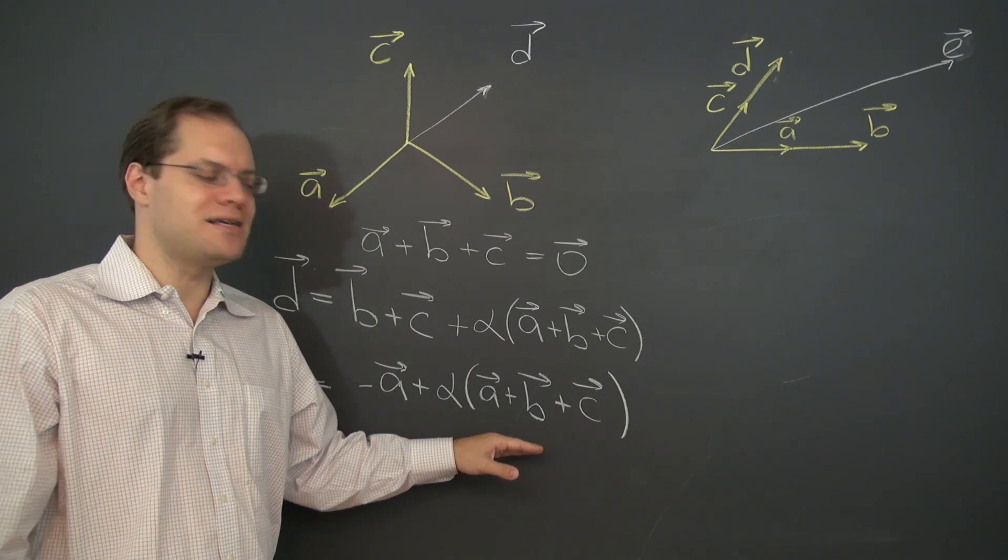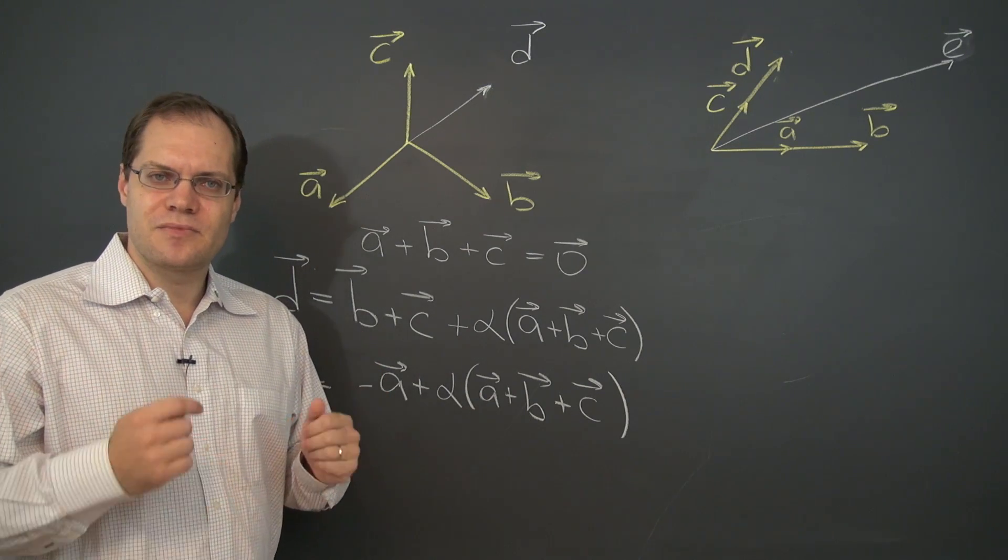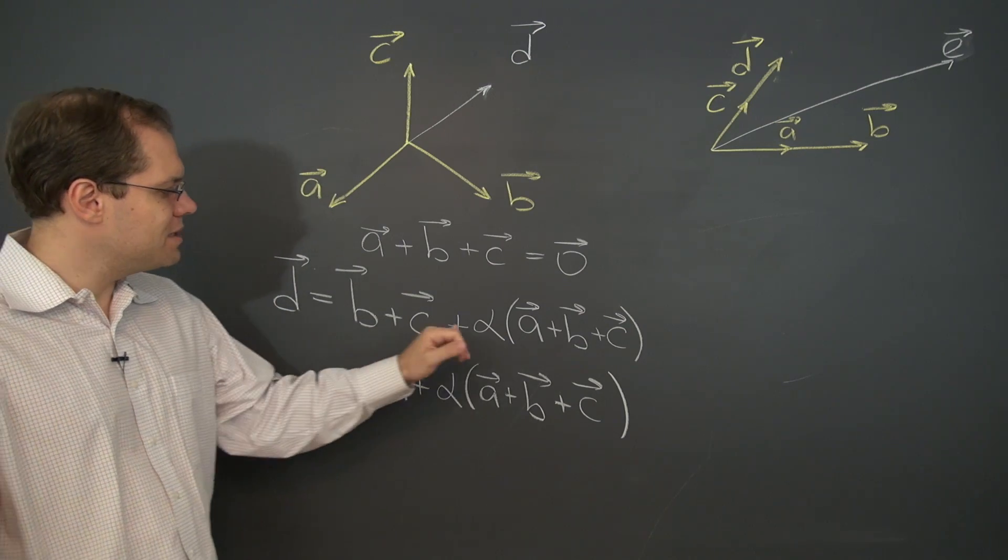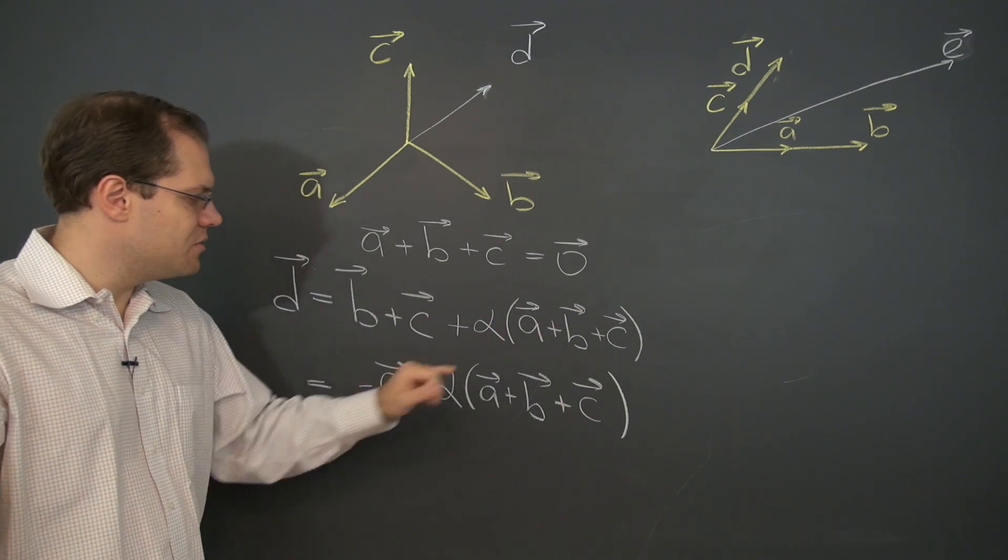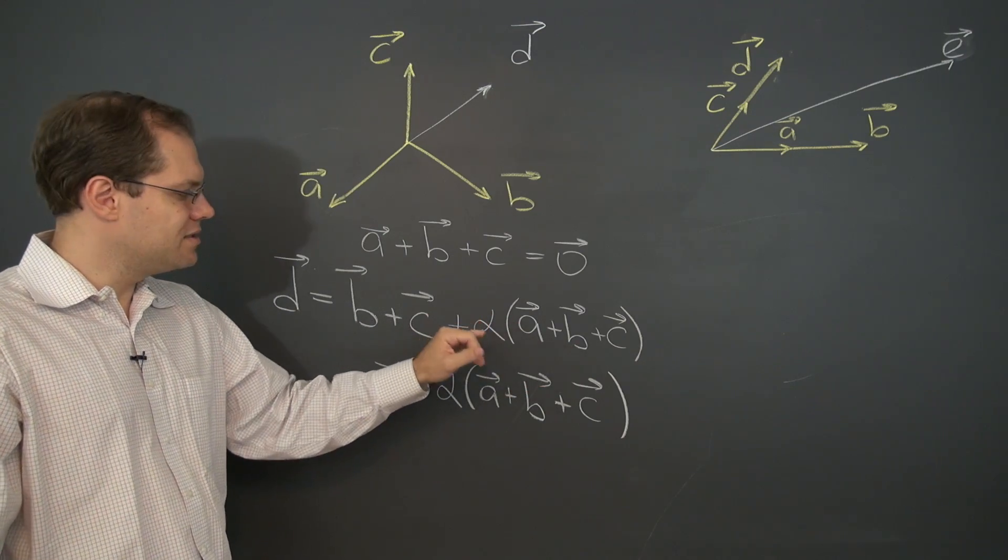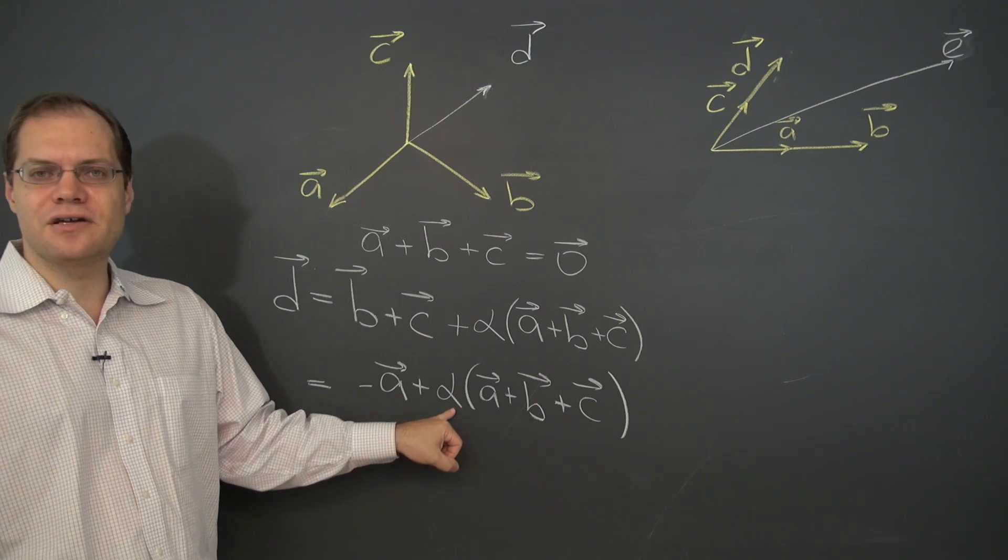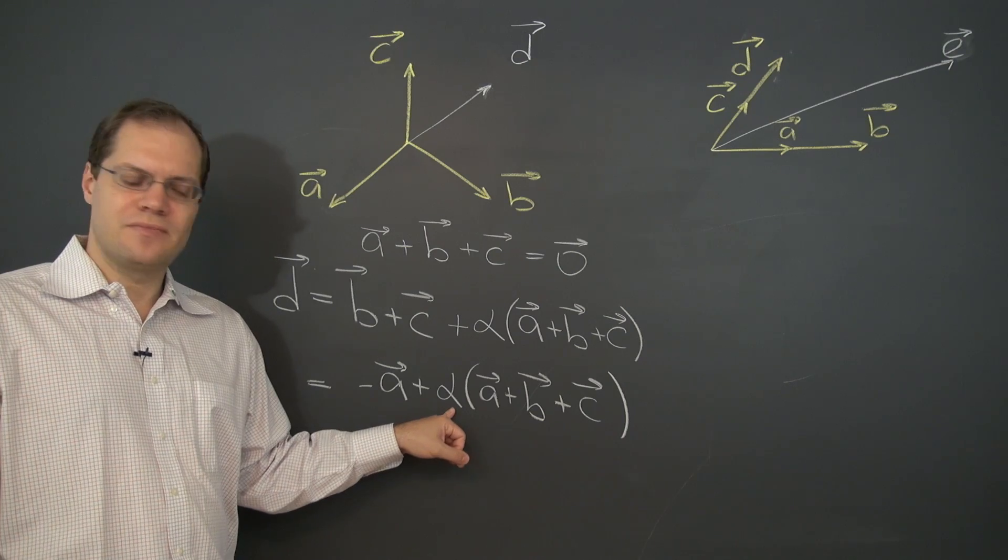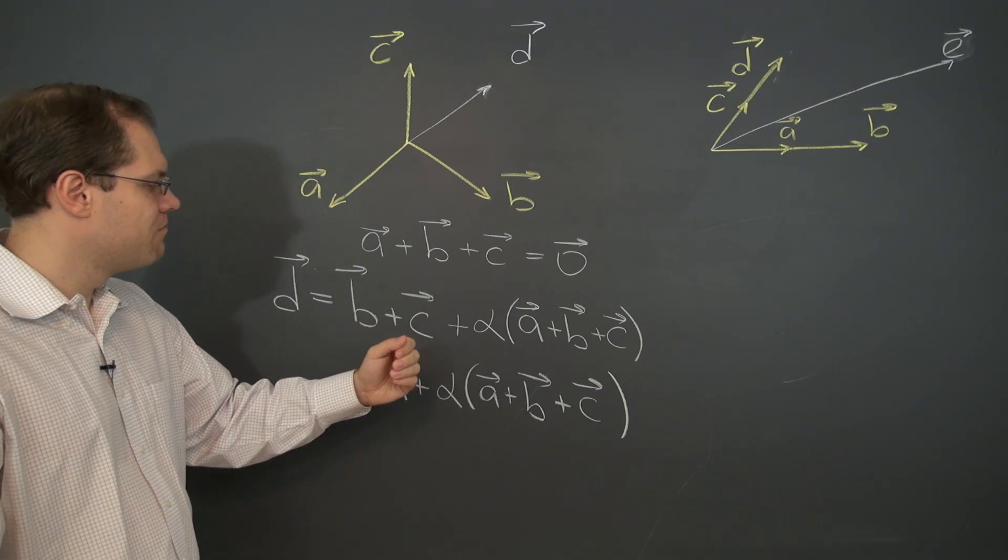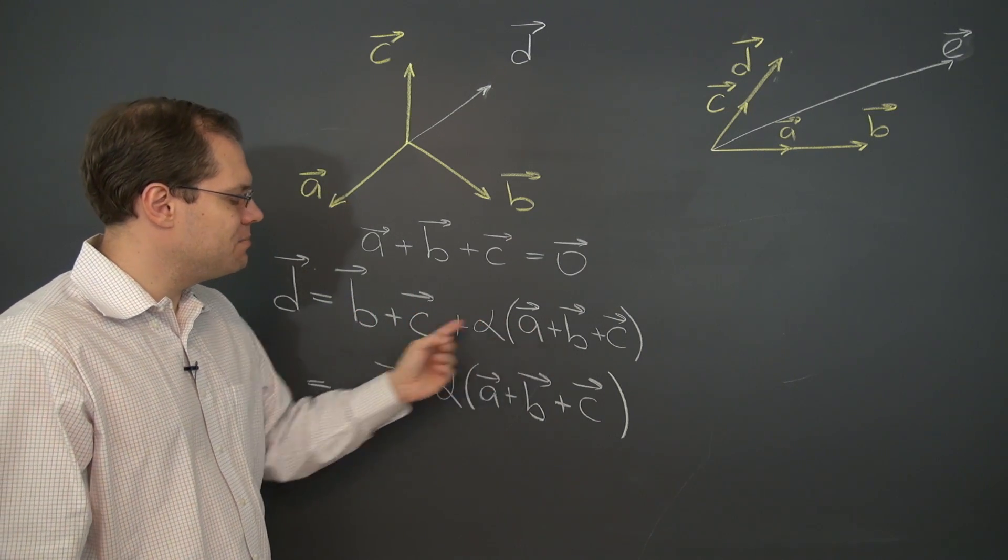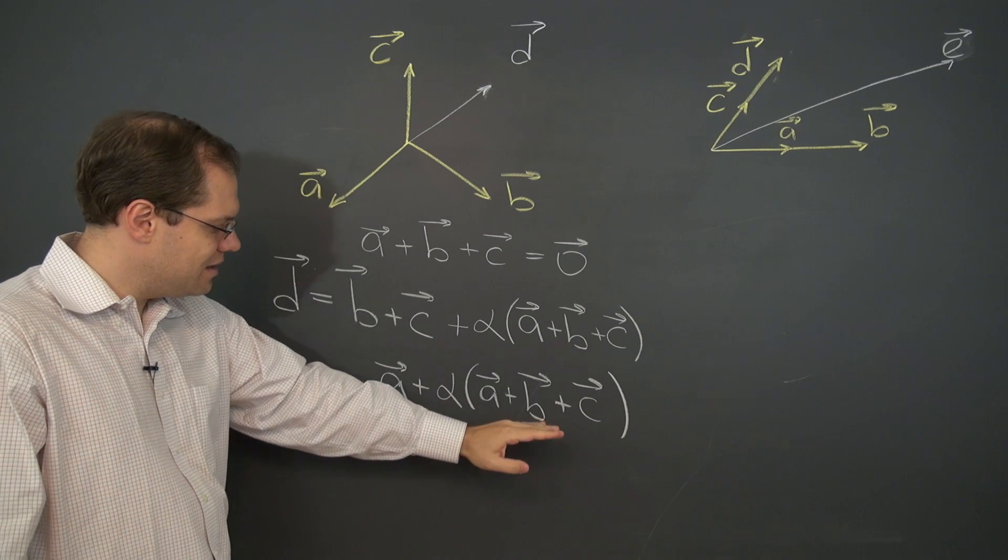But it's important to realize that these two expressions represent the same set of linear combinations. For example by taking alpha equals let's say 1 we would get a plus 2b plus 2c. When alpha equals 1 this expression delivers a plus 2b plus 2c. And you will notice that if we take alpha equals 2 here, then we would also get a plus 2b plus 2c. Let me take alpha equals 10. We would get 10a plus 11b plus 11c. 10, 11, 11. Is that same combination in this mix?